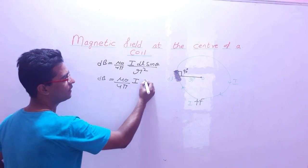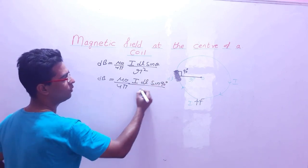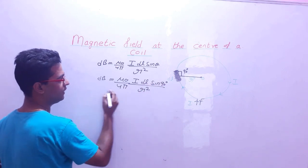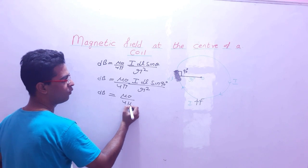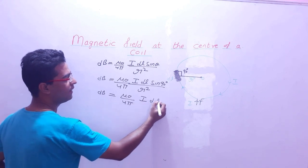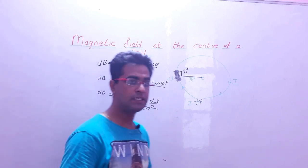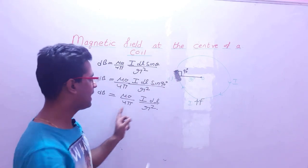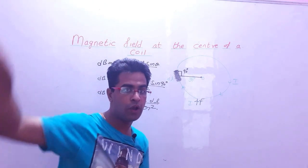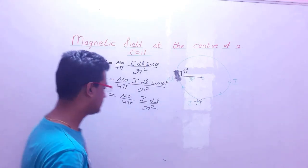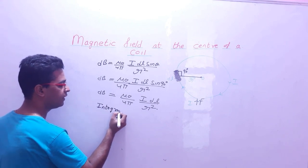dB = μ₀/4π · (I·dl·sin90°) / r²। sin90° = 1, so dB = μ₀/4π · (I·dl) / r²। यह छोटी सी wire की वजह से center पे magnetic field है। पूरी coil की वजह से कितना होगा — इसके लिए integrating both sides।